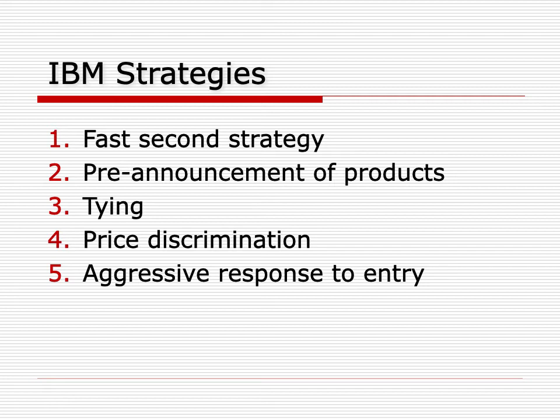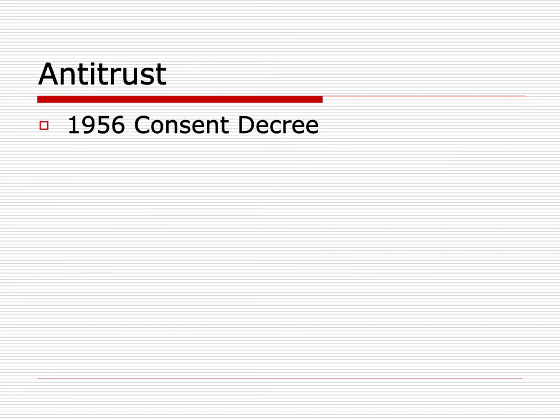We have a dominant firm displaying very aggressive behavior, and we see a government response that should be fairly familiar: antitrust. IBM had been involved in antitrust cases even before the development of computers. In 1936, before computers were invented, there was a tying case with punch cards that IBM lost. In 1952, the Department of Justice brought a Sherman Act case, Sections 1 and 2.